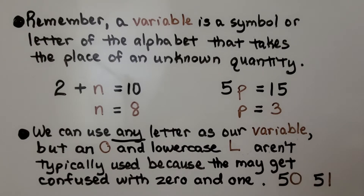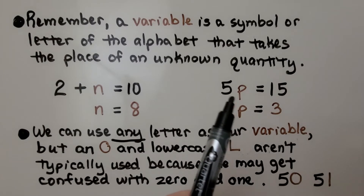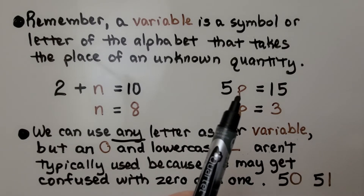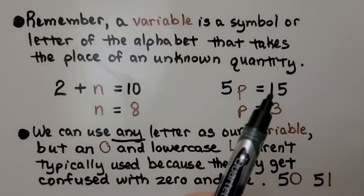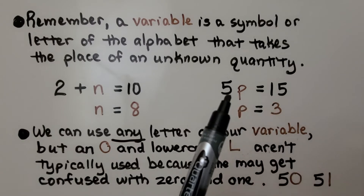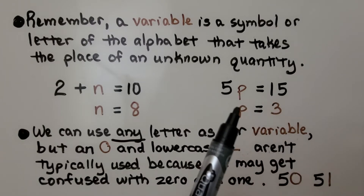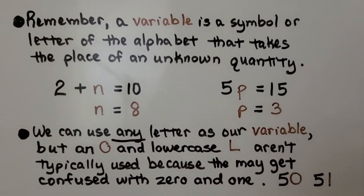If we have 2 plus n is equal to 10, we know n must equal 8. And if we have 5p next to each other, this means multiplication — that's 5 times some unknown amount p is equal to 15. We know 5 times 3 is 15, so p must be equal to 3. And we can use any letter as our variable.